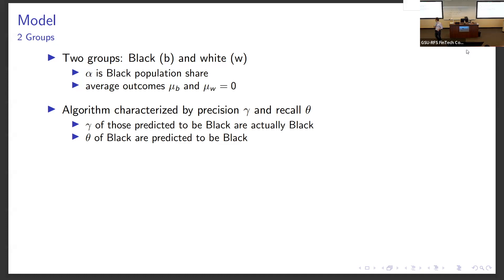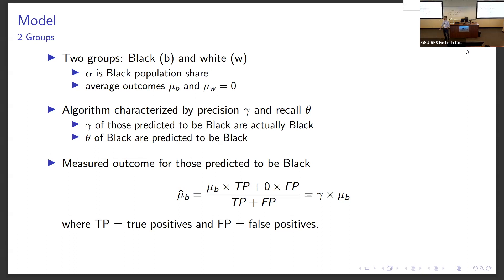The algorithm for predicting who is black will have precision gamma — so out of those predicted to be black, fraction gamma is actually going to be black — and recall theta, so theta percentage of those who are black are going to be identified as such by the algorithm. Given this characterization, we can straightforwardly calculate the measured outcome for those predicted to be black as a weighted average between true positives — blacks classified as such — and false positives of whites predicted to be black.